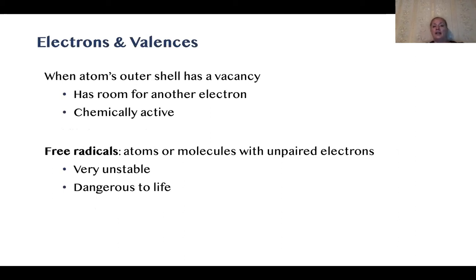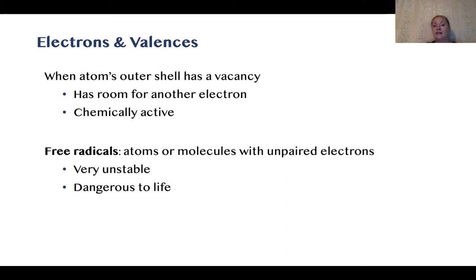When an atom's outer shell has a vacancy, it might have room for one, two, or even three electrons. In the case of carbon, it has room for four electrons — making it chemically active. We can also have free radicals, where atoms or molecules exist with unpaired electrons. These are very unstable and can be dangerous to life. You'll see advertisements for vitamins as antioxidants that react with free radicals to stop damage, and facial creams advertised as having antioxidant properties to prevent free radicals from harming your skin.